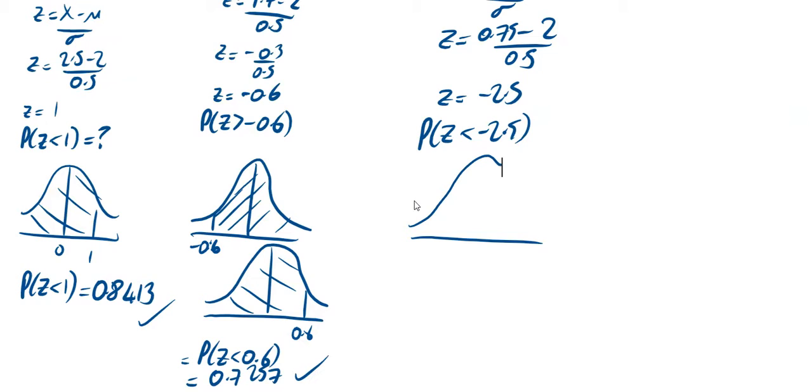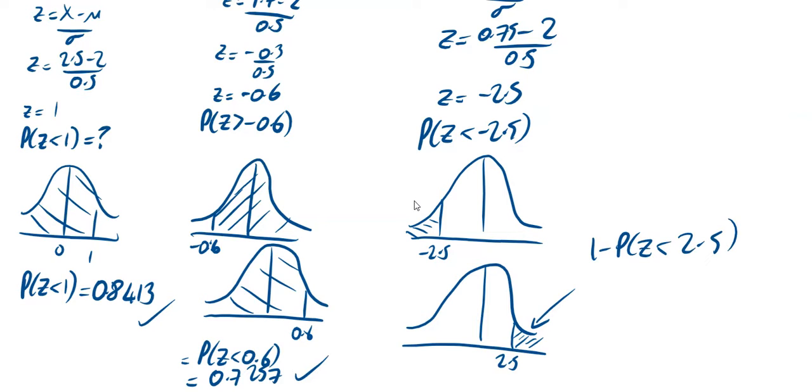And then we can get cracking with that. So a diagram for it. Bell shape diagram. There's your minus 2.5. That's what we're looking for in here. Mark on your zero. Flip that around using symmetry. So this shaded area is one minus the probability that Z is less than 2.5. So that's one minus something.